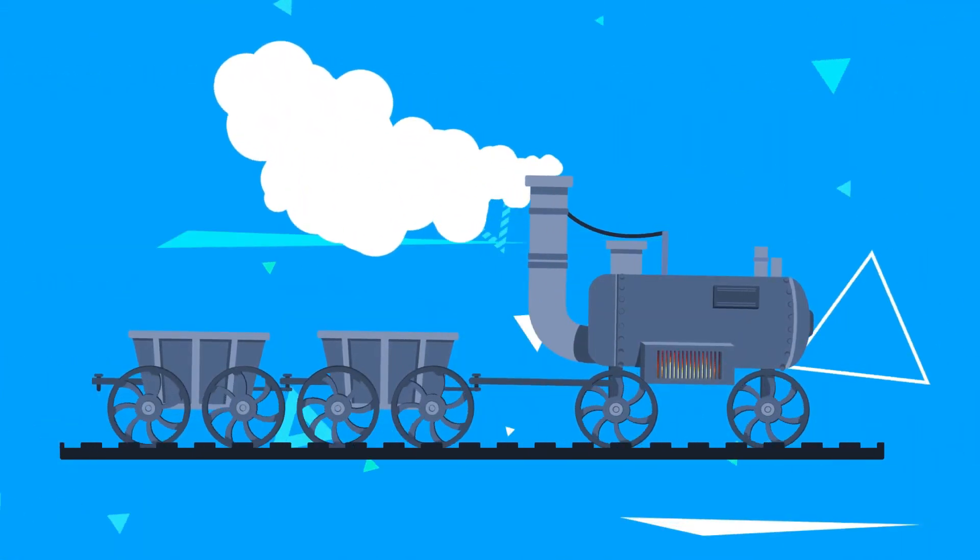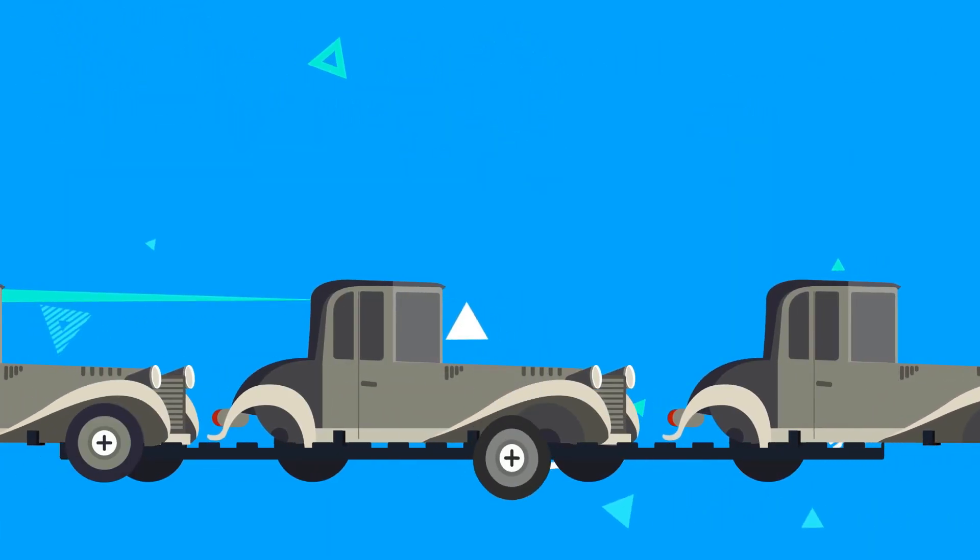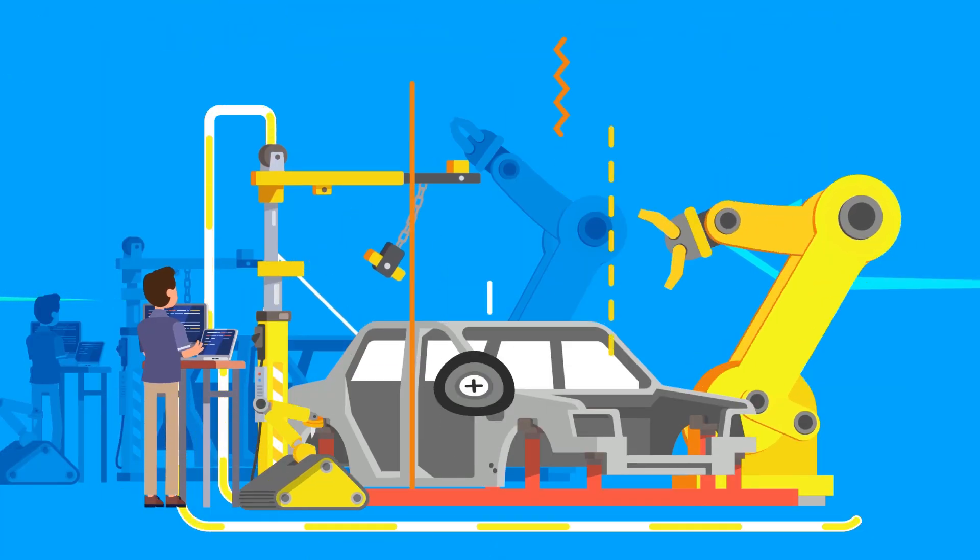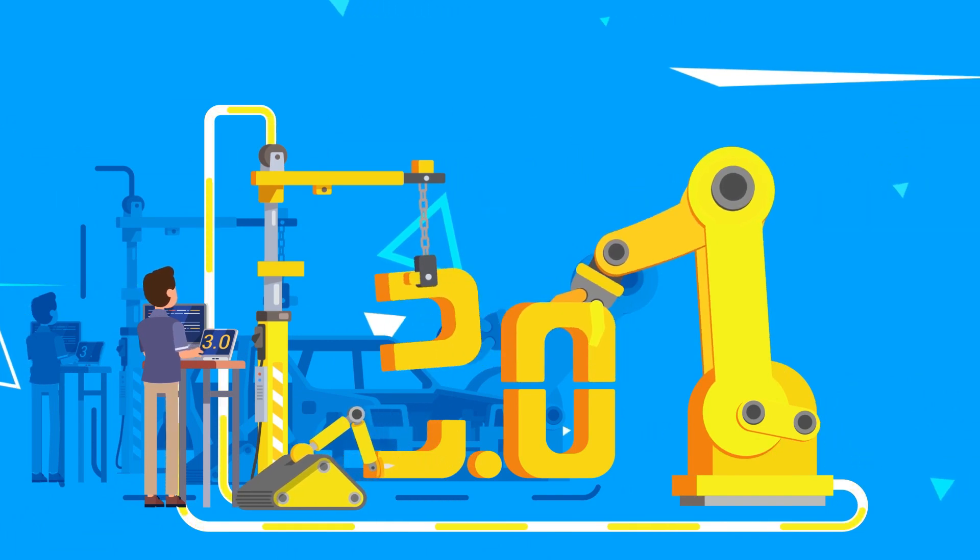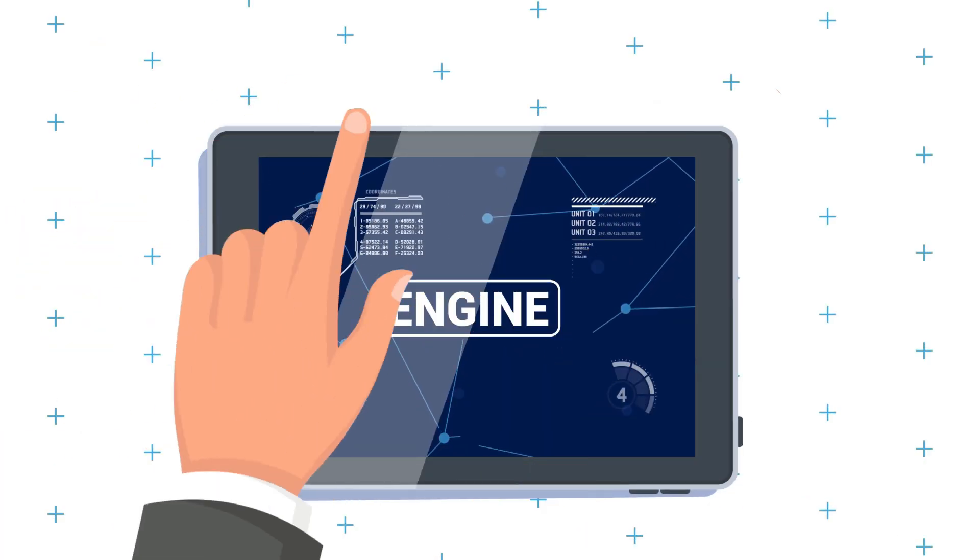The first revolution transformed the industry by using steam in the 18th century. Mass production was the second, changing our life by the beginning of the 20th century. The industrial usage of computers and automations is the third revolution that we're living in since the 1970s. The fourth revolution, Industry 4.0, has already begun.